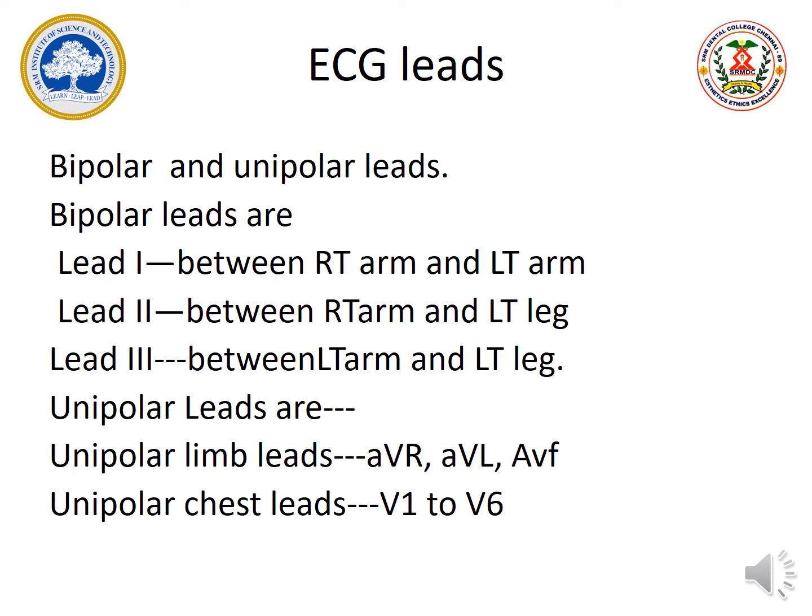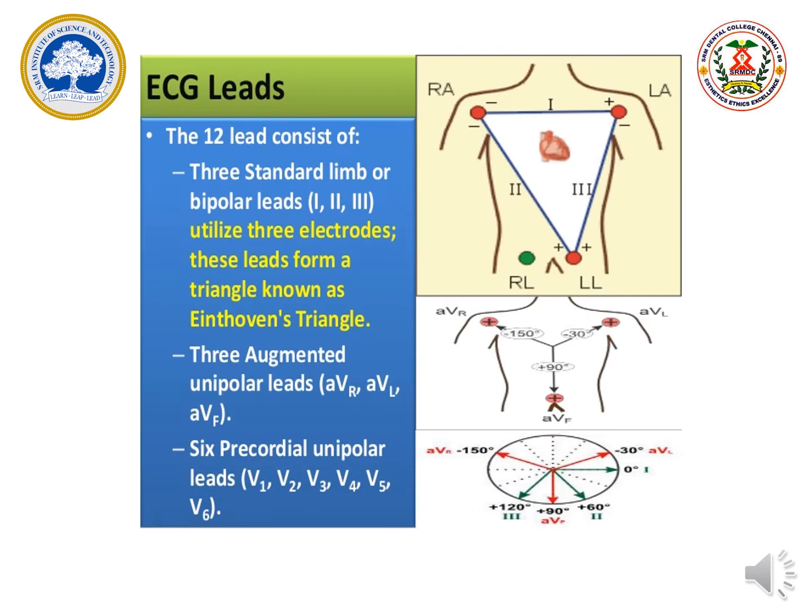Next are unipolar leads, which pick up information individually. These are called AVR, AVL, and AVF. There are unipolar limb leads and chest leads. Chest leads are V1 to V6.